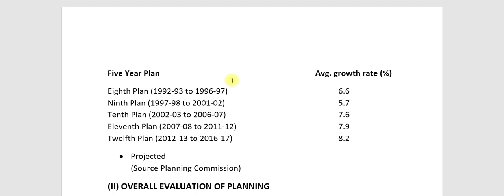The average growth rates across Five Year Plans are: 8th plan — 6.6 percent; 9th plan (1997–2002) — 5.7 percent; 10th plan (2002–2007) — 7.6 percent; 11th plan (2007–2012) — 7.9 percent; and 12th plan (2012–2017) — projected average growth rate of 8.2 percent. These are projected figures.